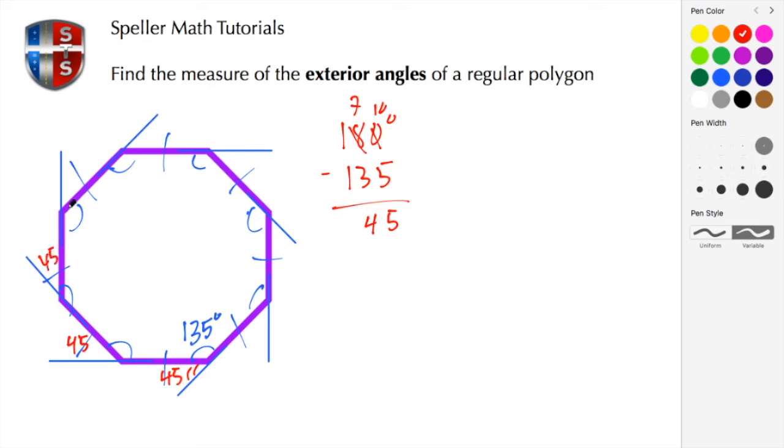All right, another characteristic that I want you to recognize here is that the sum or total of these exterior angles is 360 degrees. Let's go ahead and show that.